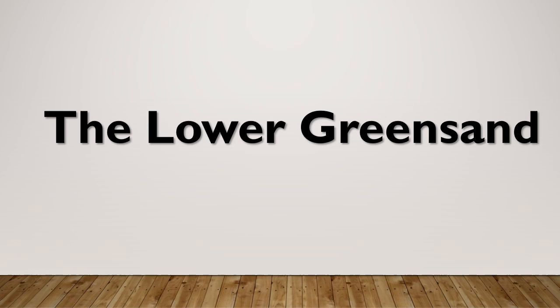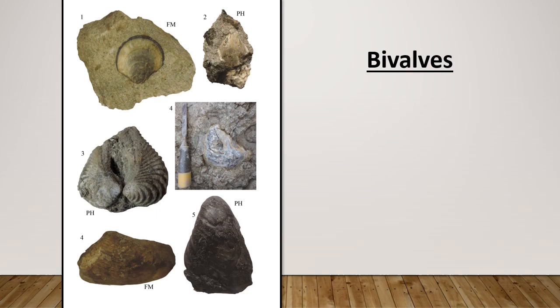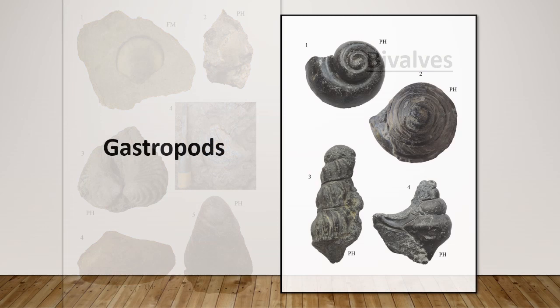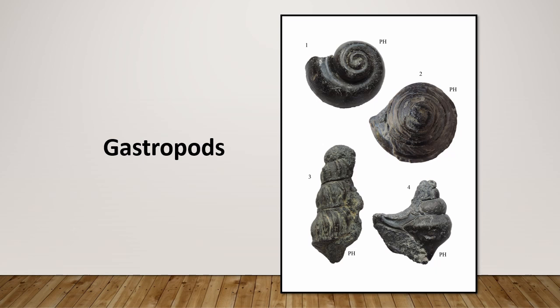Now let's look at some of the fossils you can find at Folkestone. We've got lots of bivalves including the ubiquitous Trigonia. There are also several, probably dozens, of species of gastropod. Quite a few of these are actually very similar to the ones you find in the Gault Clay as well.